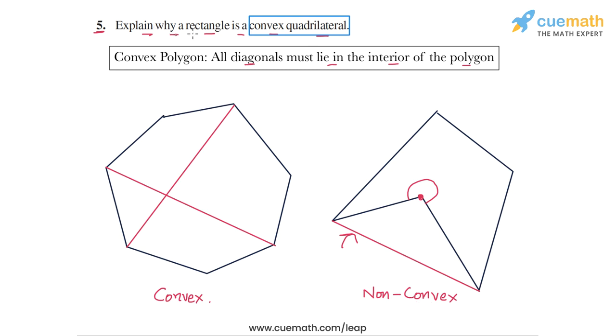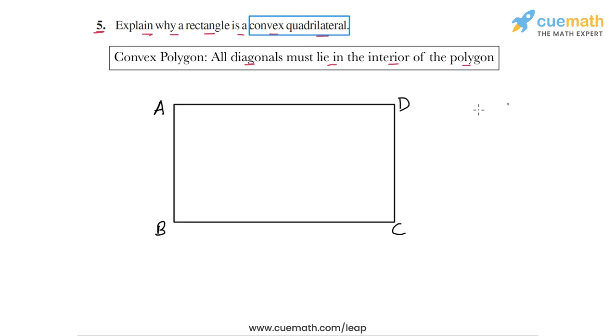So this question is about explaining why a rectangle is a convex quadrilateral. Now after this discussion, the solution should be quite straightforward. Let's look at any rectangle. Let's take this rectangle ABCD. There are only two diagonals we can draw in this rectangle.